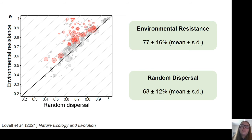The environmental resistance model was better for 78% of species — these are the points above the line. The random dispersal null model could be rejected for 22% of species, indicated in red. Although 22% may not sound like much, it's actually quite high, considering that most aliens have a small range size and so there's limited statistical power.